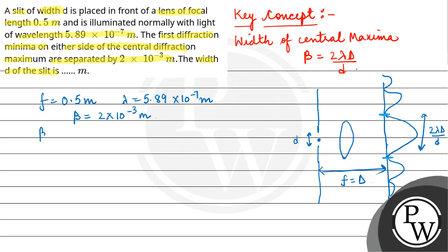We will use the formula β = 2λD/d. We need to find d, and capital D equals focal length. So the distance between minima, 2 × 10^-3, equals 2 × λ, which is 5.89 × 10^-7, times D, which equals focal length 0.5 meter, divided by d.